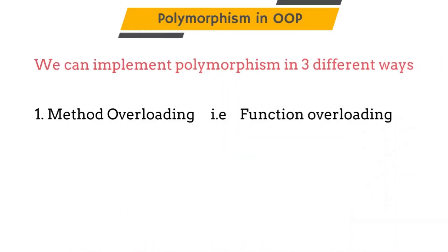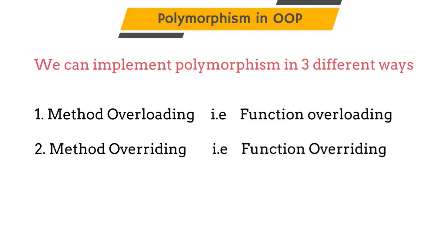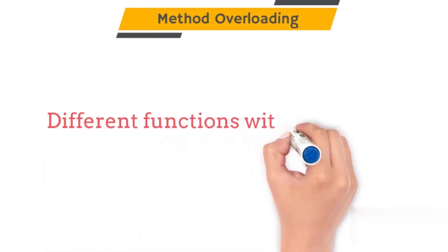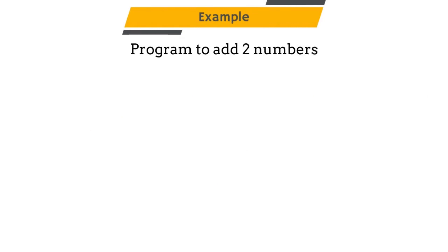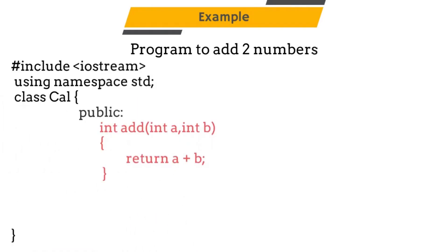We can implement polymorphism in three different ways: first is method overloading (also called function overloading), second is method overriding (also called function overriding), and third is operator overloading. In this video we will learn about method overloading. Method overloading is a type of polymorphism which allows us to create different functions with the same name. Consider a program where I want to add two integers — I create a function called add which takes two integers as parameters and returns their addition.